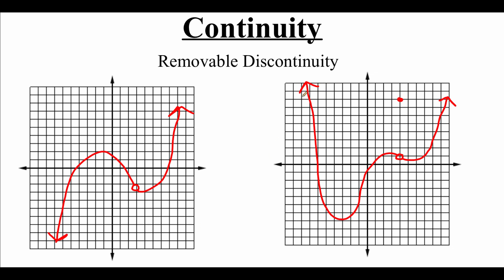Now in this other picture, this is also removable discontinuity. But if we look at the hole in our graph, directly above it there's a point. So your function might be defined for a certain value, but it might not fall within the line or curve of the graph — that point might be somewhere else. It's still removable discontinuity because we need to pick up our pencil to jump over that hole before we can continue drawing the picture.